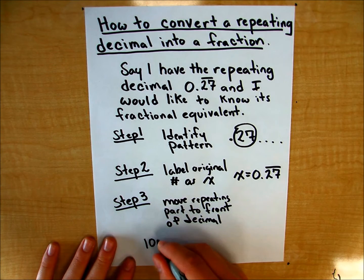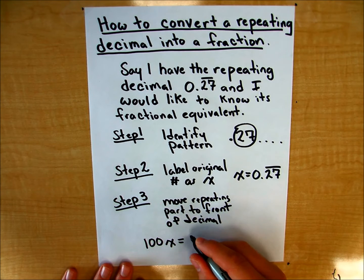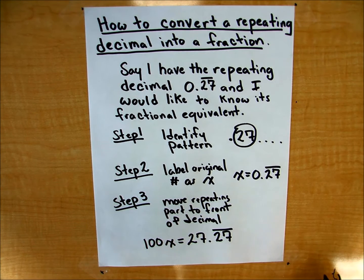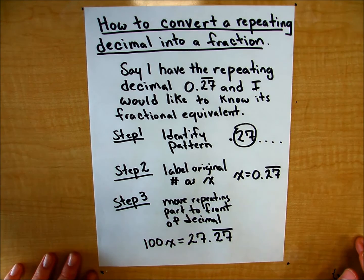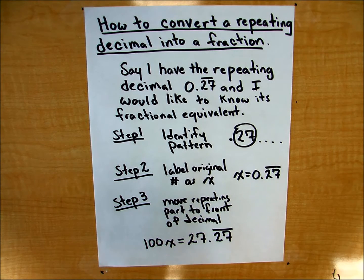If I do that, I'll get 100x on the left side is equal to 27.27 repeating. Okay? So now I have my repeating portion on the left side of the equation.